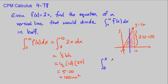So 0 to a of 2x dx. And what do we want that to equal? Half of the area is 50 units.